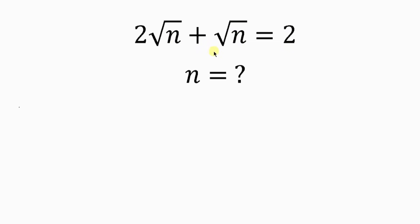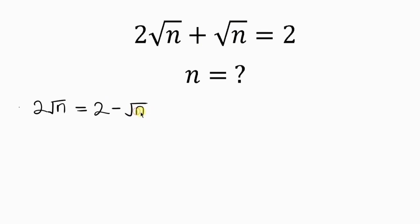Our first step will be to move the square root of n to the right hand side, so that we have 2 root n equal to 2, and as the square root of n crosses to the right it becomes minus the square root of n.